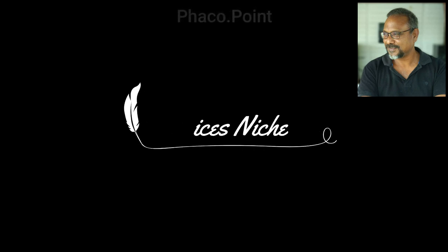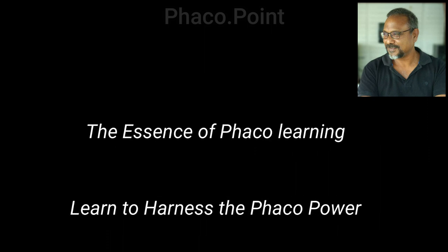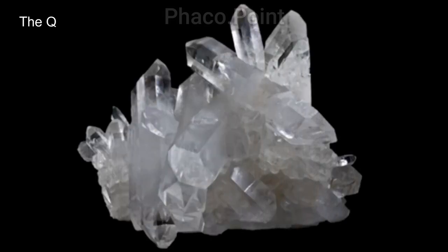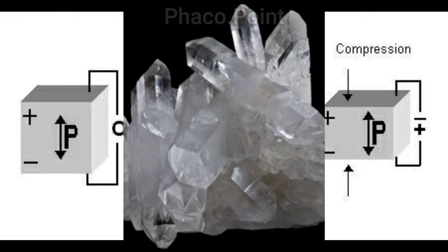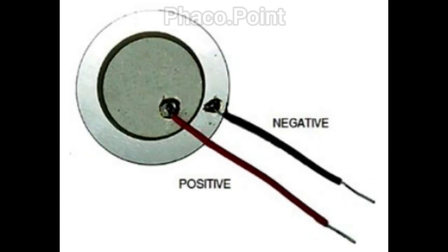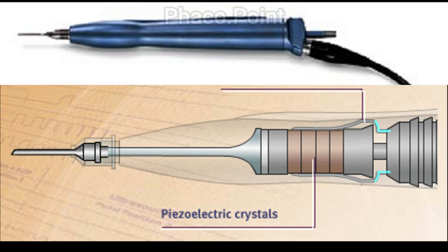In most modern FACO handpieces, the FACO power is generated because there exists within these handpieces a special crystal called the quartz crystal, which is a naturally occurring crystal in nature. The peculiar feature of this crystal is that when it is rapidly expanded and compressed, it can generate a voltage of current. These piezoelectric crystals are now available commercially and used in a FACO handpiece.